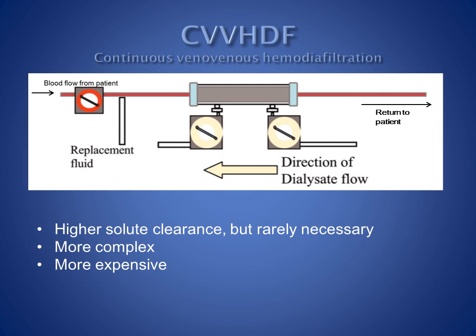If high solute clearance is required, most haemofiltration machines can be used to provide continuous haemodiafiltration, or CVVHDF. Dialysate fluid is infused countercurrent to the direction of blood flow in the filter, and solute movement by diffusion is added to convective losses with ultrafiltration. My own observation is that solute clearance is rarely a problem with CVVH, unless the filter is clotting frequently, and CVVHDF adds complexity and expense to the technique with no patient benefit.